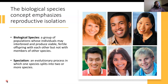The biological species concept emphasizes reproductive isolation. With this concept, we can now define what biological species are: a group of populations whose individuals may interbreed and produce viable fertile offspring with each other, but not with members of other species. Therefore, speciation itself is an evolutionary process in which one species splits into two or more species.